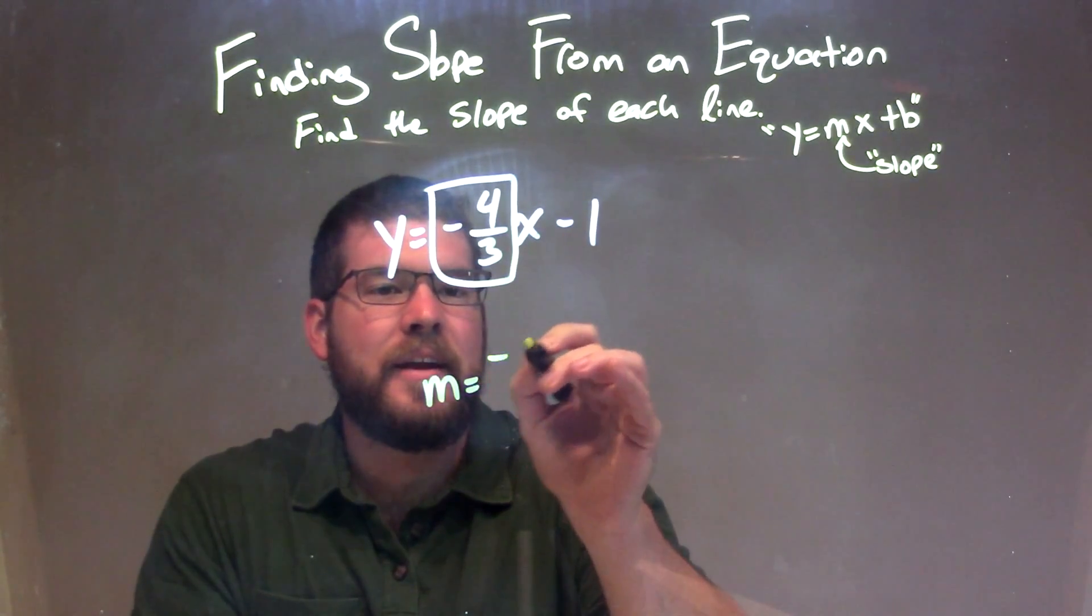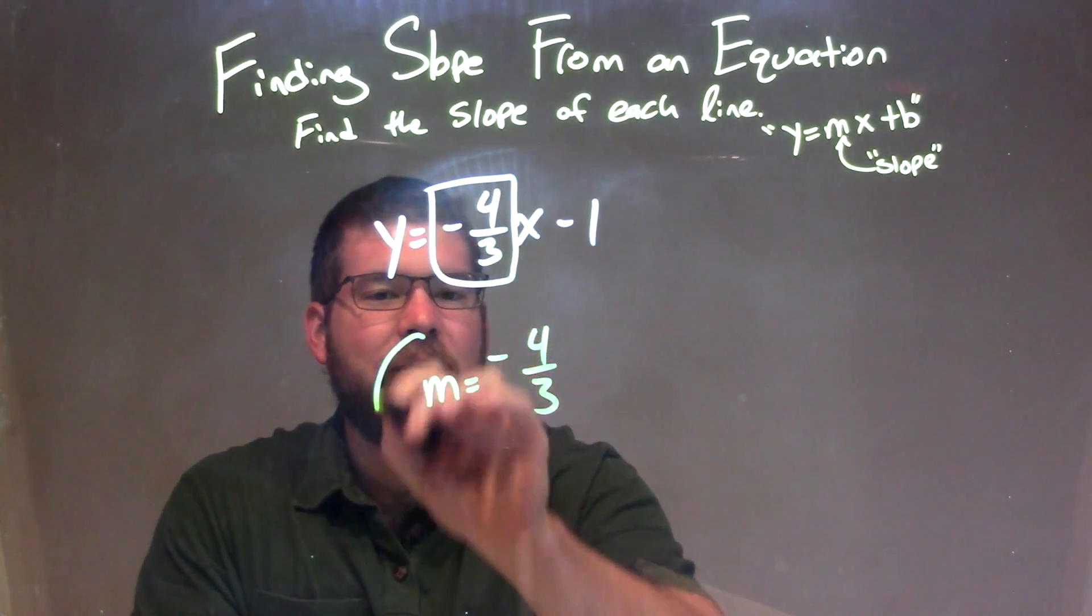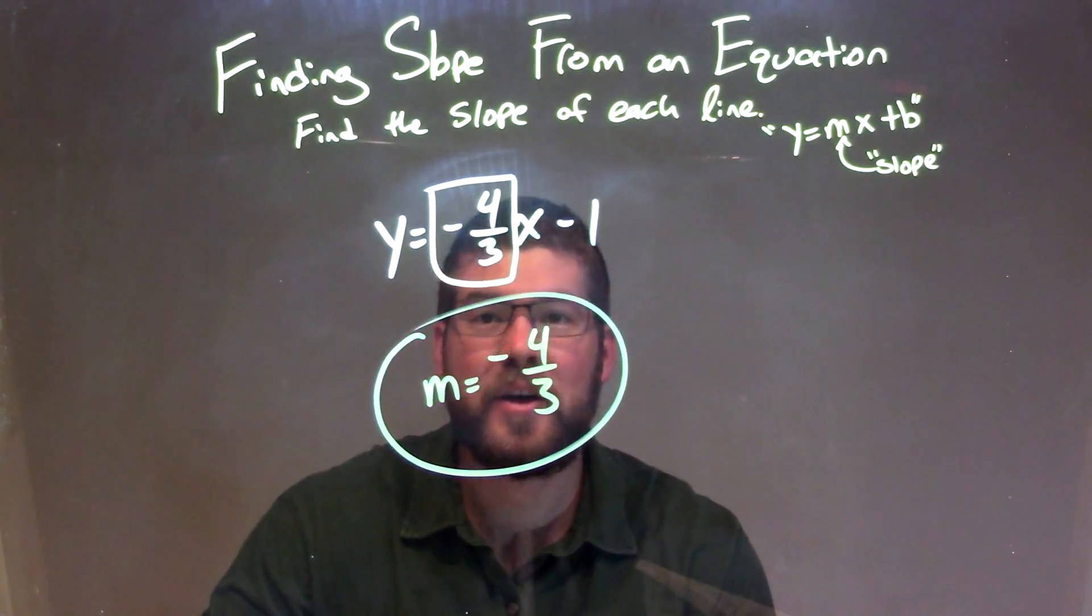So I'm going to write it down here, negative four-thirds, and that is our final answer. It's right there, pretty simple.